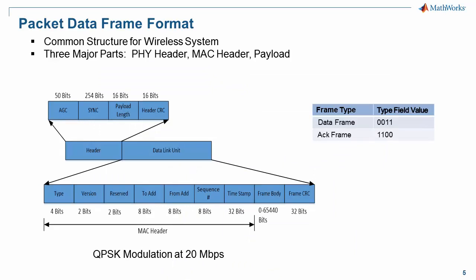Before we discuss the model, let's look at the signal frame format used in modeling this network. The signal format has a common structure for wireless networks. It has three essential parts: the physical header, the MAC header, and the payload. The signal frame can be a data frame for content delivery or an acknowledgement frame for access control. For simplicity, the modulation used in this network is QPSK at the rate of 20 megabit per second.